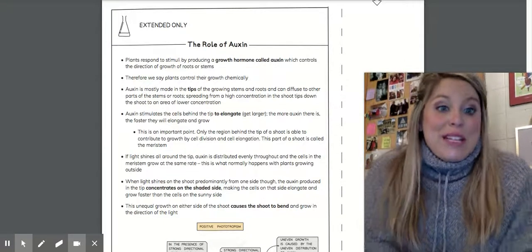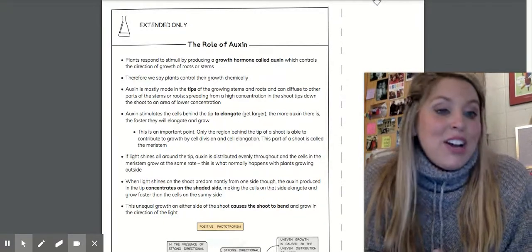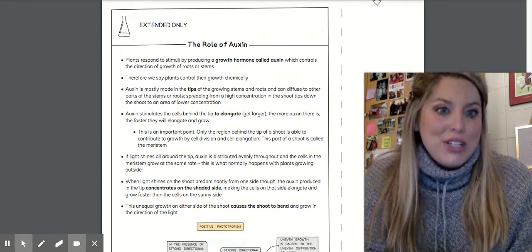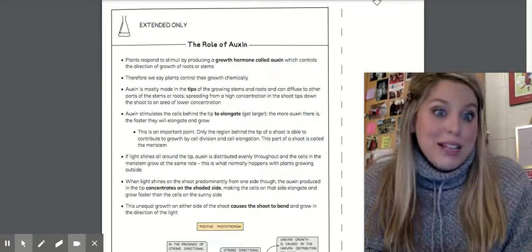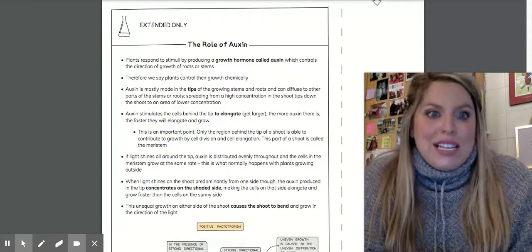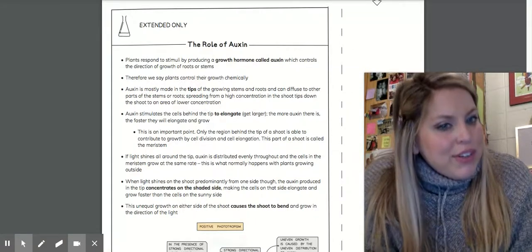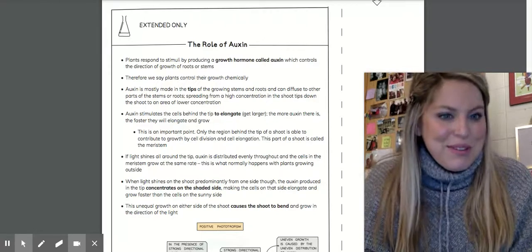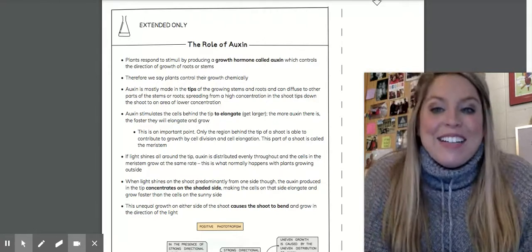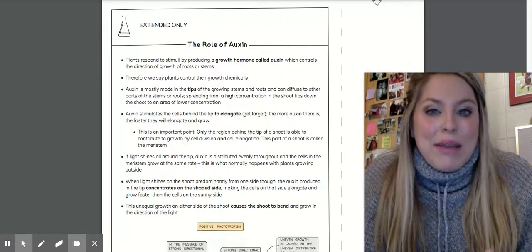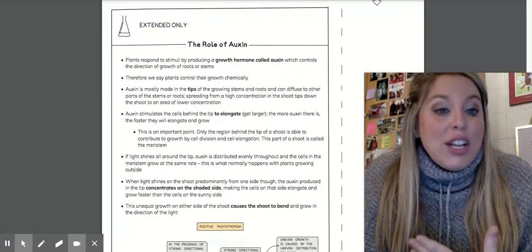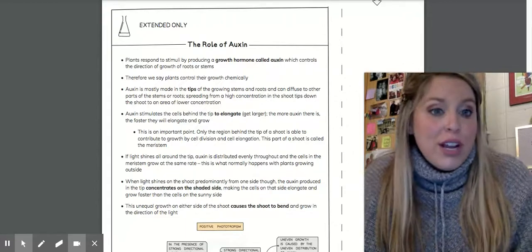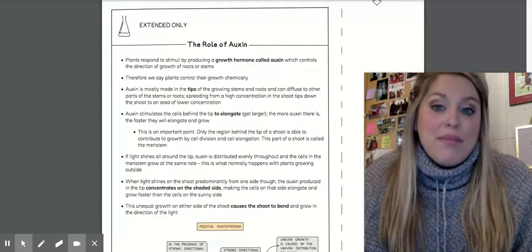All right, last section, 13.5, looking at auxins as well as weed killers in plants in relation to their coordination and response. The auxin, probably another word you have never used before or heard of, and that's okay. That's what I'm here for, to tell you about it. Plants respond to stimuli by producing something called an auxin. It is a growth hormone that controls the direction of growth in our roots and stems of plants.